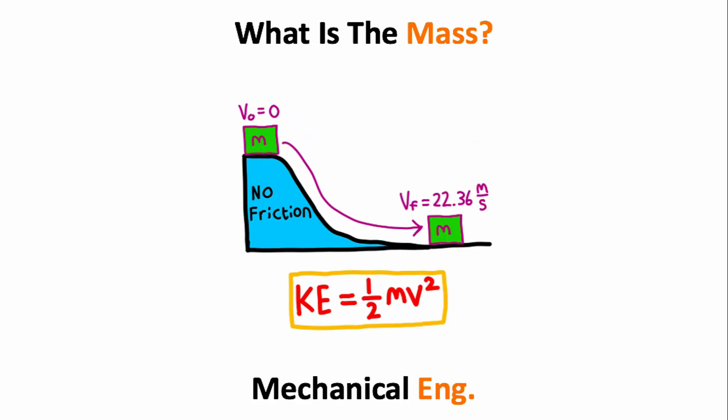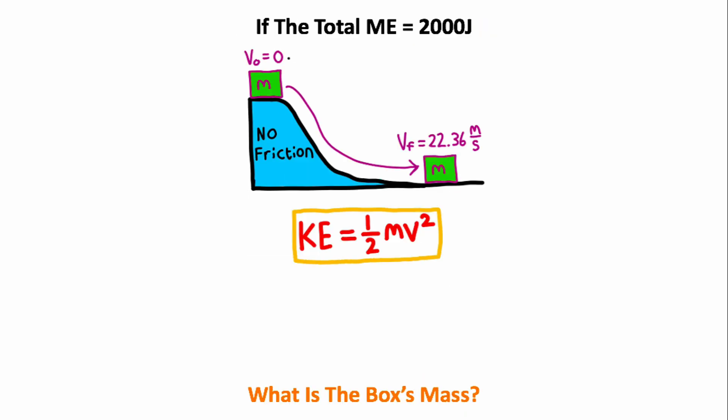We are going to solve this engineering problem in 60 seconds. So here we have a box which slides all the way down a hill. What is the box's mass? Now to solve this problem, I can use the equation for kinetic energy, which is given down below.